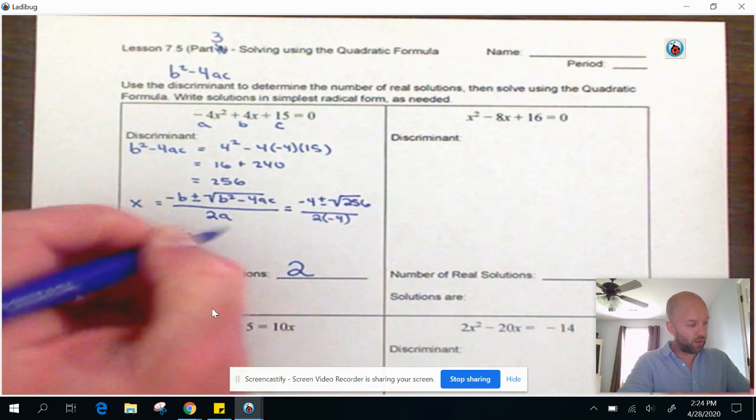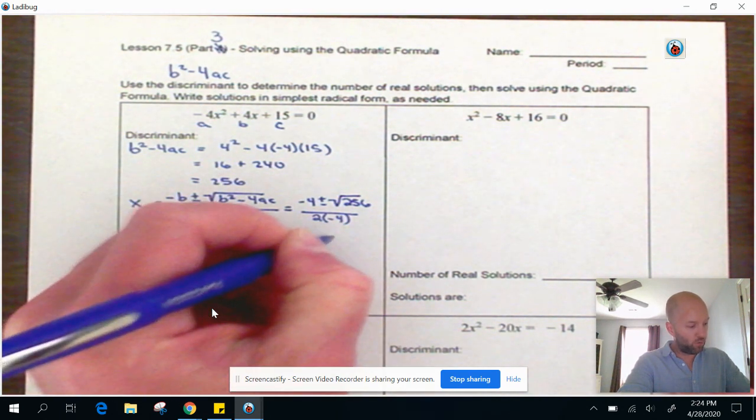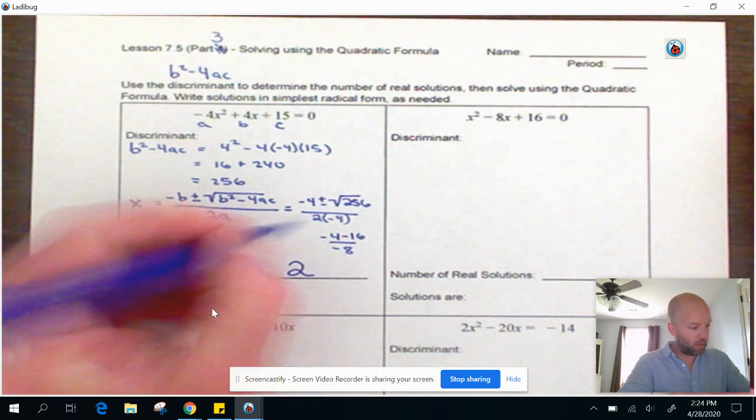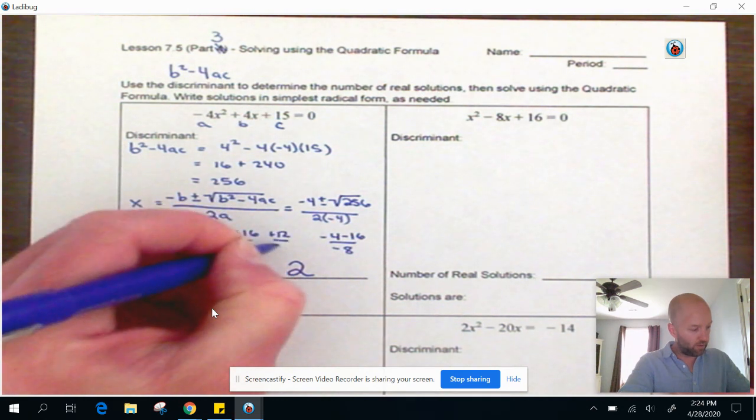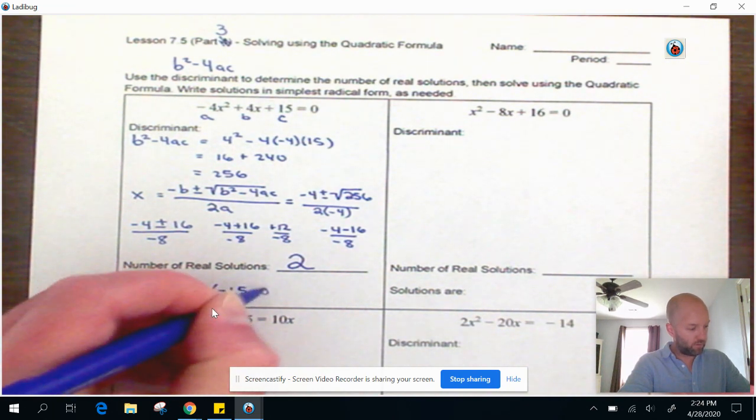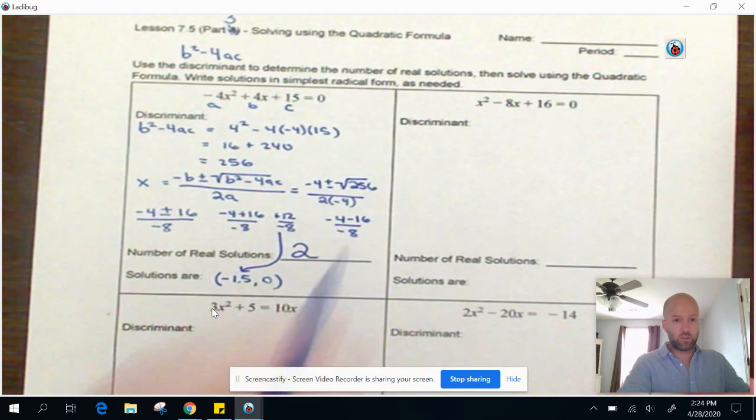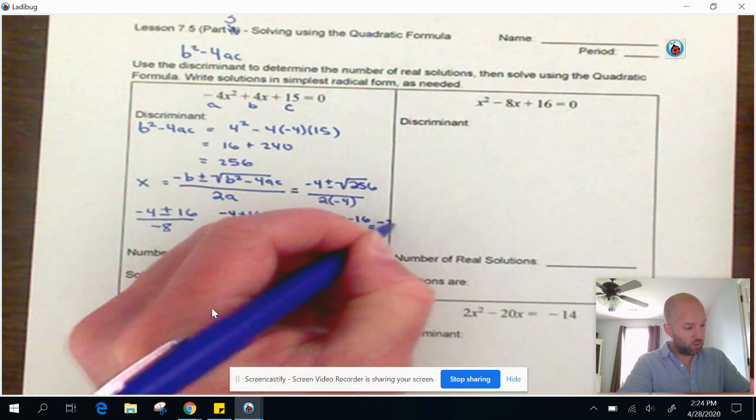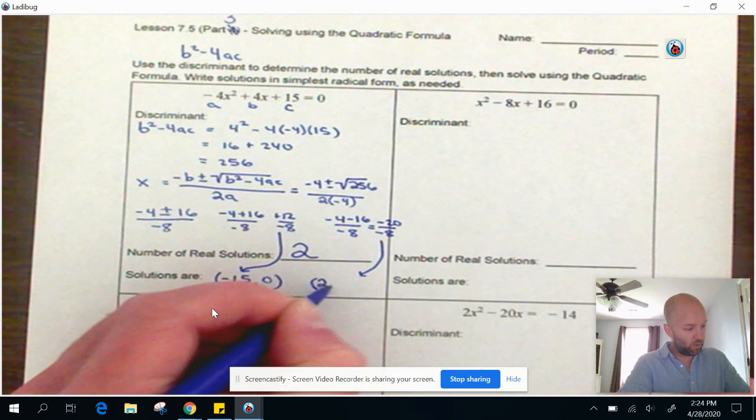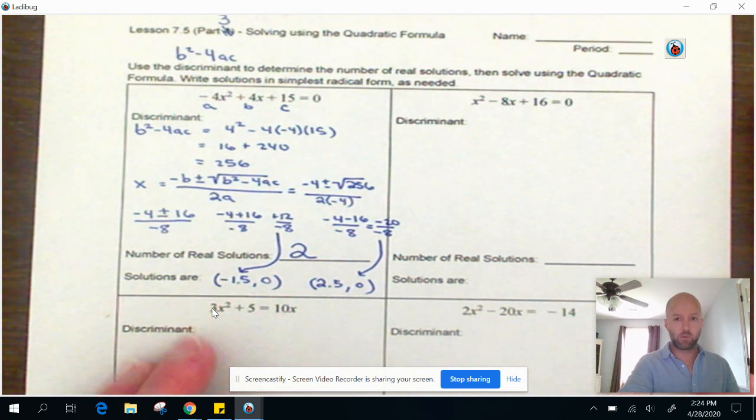So we've got two options here. We've got negative 4 plus 16 divided by negative 8. And we have negative 4 minus 16 divided by negative 8. These two right here make positive 12 over negative 8. When I do that in my calculator, that gives me negative 1.5 paired with 0. So that is this one. And then these two give me negative 20 divided by negative 8. And when I do that math, it is 2.5. And remember, our solutions are always paired with 0 because they cross the x-axis. All right. Number 1 is done.